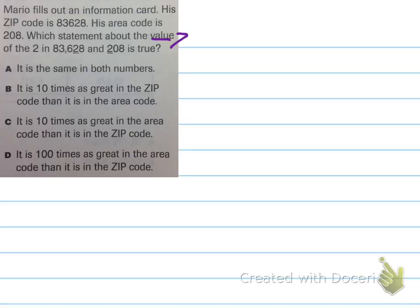Which statement about the value of 2 in 83,628 and 208 is true? Well, it's asking about the value. So, the first thing I'm going to do is decide what the value is of these 2s. So, in the first one, they give us the zip code, 83,628, right? This 2 is underlined. What's the value of that 2? The value of that 2 is 20, because the 2 is in the tens place. Two tens is the same as 20.